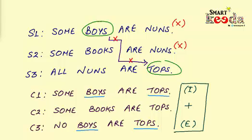Now let's check the conclusion 2 in which we need to find a relationship between the classes of books and tops. You can see that the middle term which is nuns here is not distributed in S2 but it is distributed in S3.